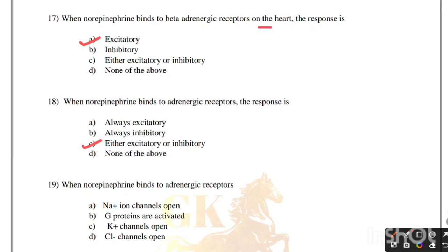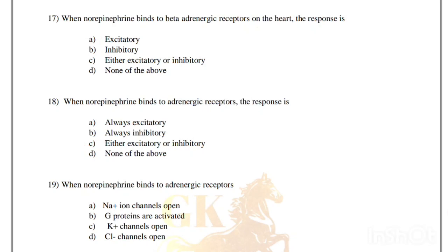When norepinephrine binds to adrenergic receptors, what happens? Options: sodium ion channels open, G proteins are activated, potassium channels open, chloride channels open. Correct answer is option B, G proteins are activated.